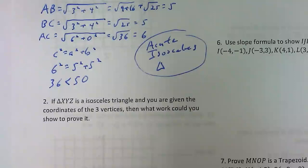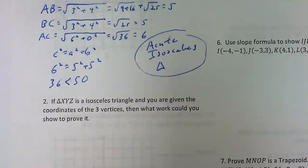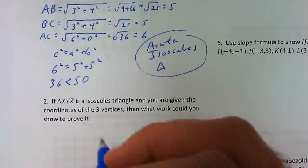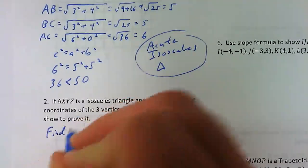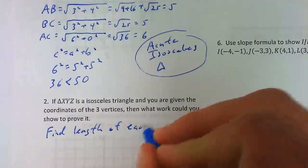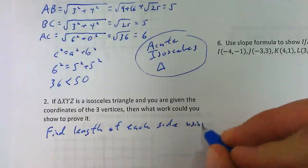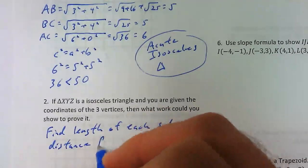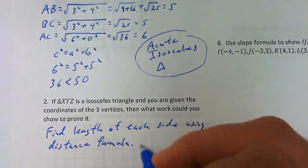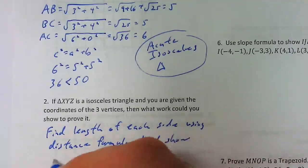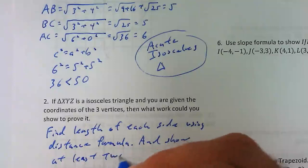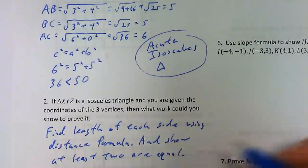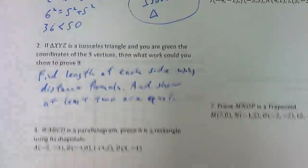Number 2 asks: if a triangle is isosceles and you're given the coordinates of the three vertices, what work could you show to prove it? Similar to what we just did - use the distance formula. Find the length of each side and show that at least two of them are equal. In order to have an isosceles triangle you have to have at least two equal sides.